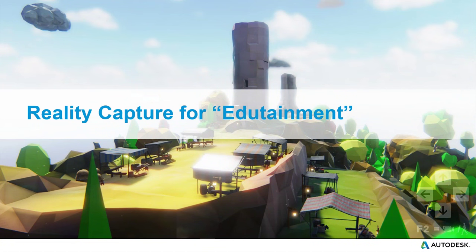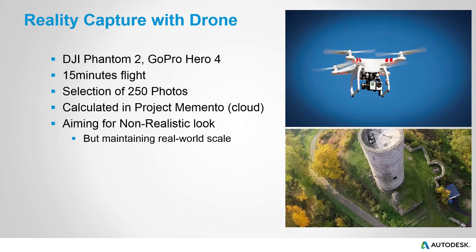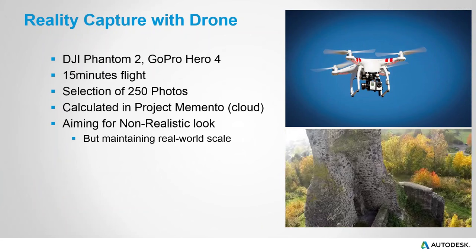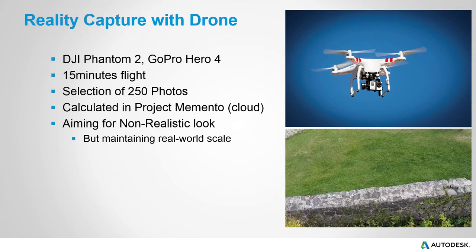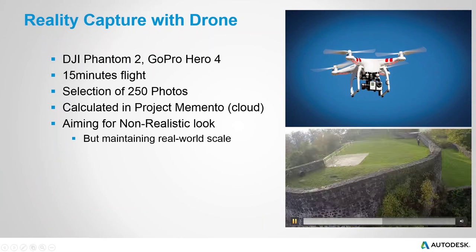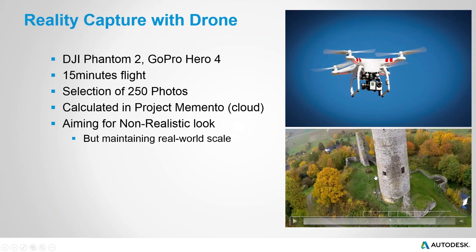Final project: reality capture. I used my DJI Phantom drone — the Phantom 2 with a GoPro attached — and did a 15-minute flight taking roughly 300 to 350 photos. I selected 250 of those to scan. I used Project Memento — there are a lot of photogrammetry tools out there that enable you to turn photos into a 3D environment. Memento is available for free and uses the cloud, so it doesn't eat up my machine. I got decent results.